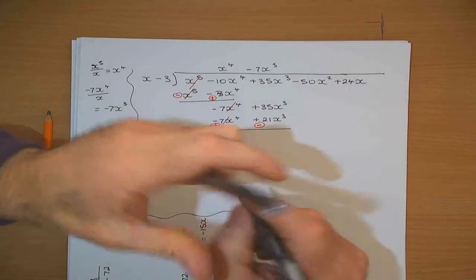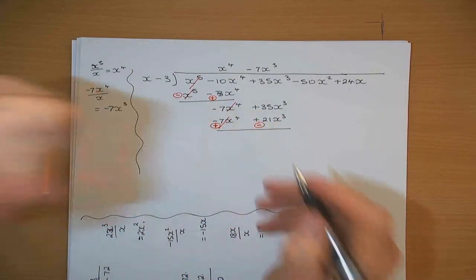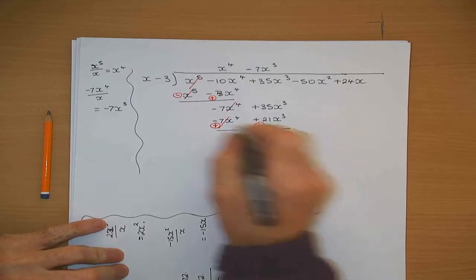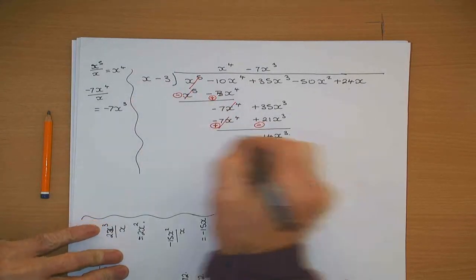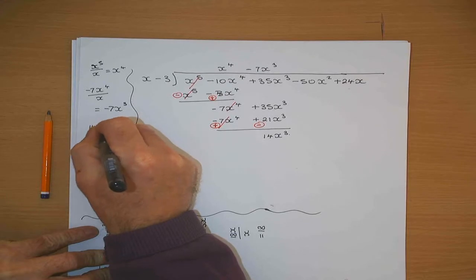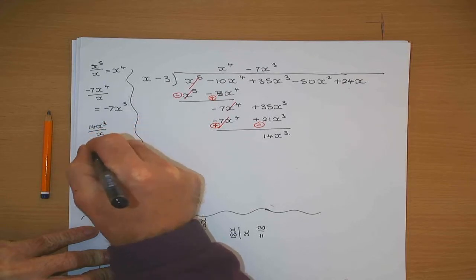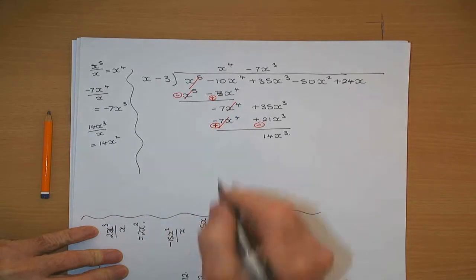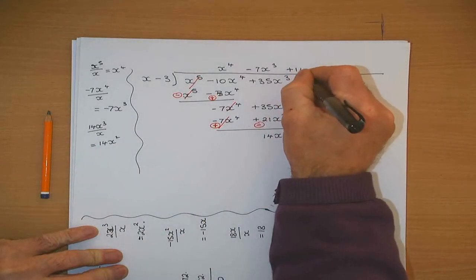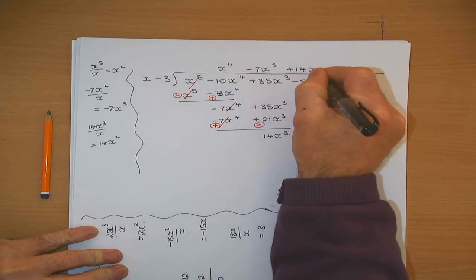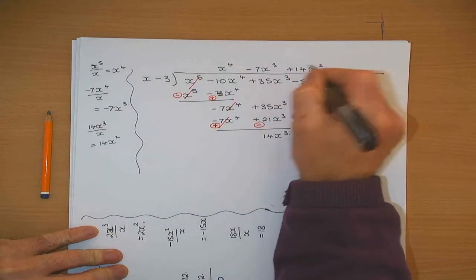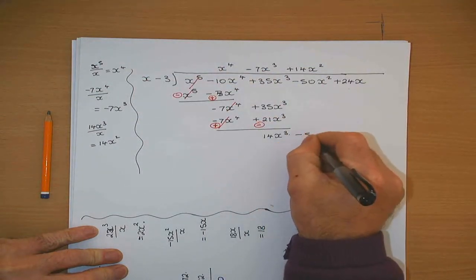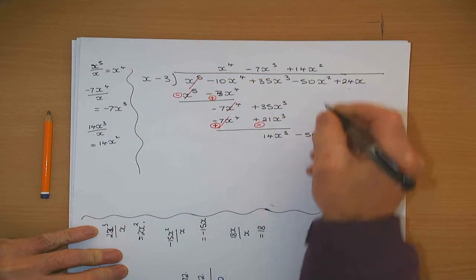35x cubed minus 21x cubed gives 14x cubed. x will divide into that — 14x cubed divided by x leaves me with 14x squared. It divides in plus 14x squared. 14x squared by x gives 14x cubed. I didn't bring down the minus 50x squared here.